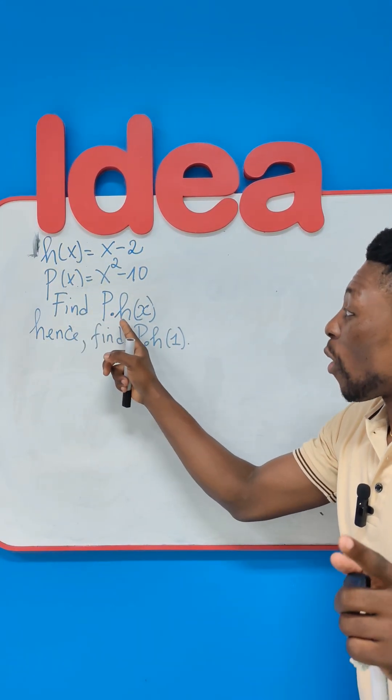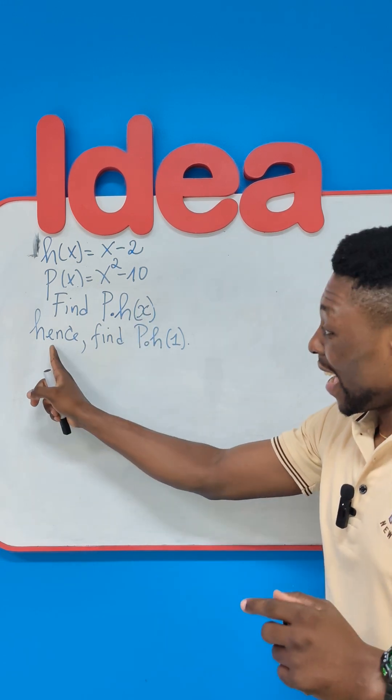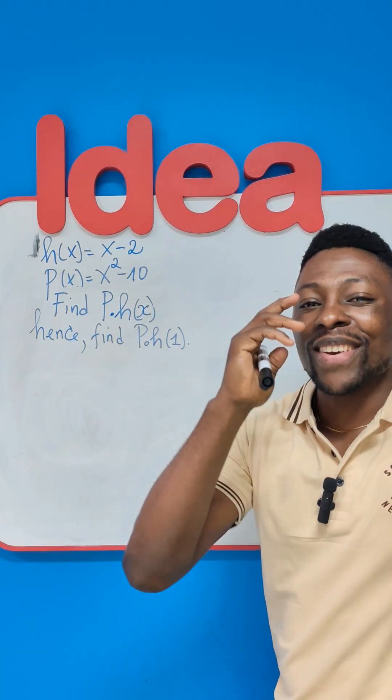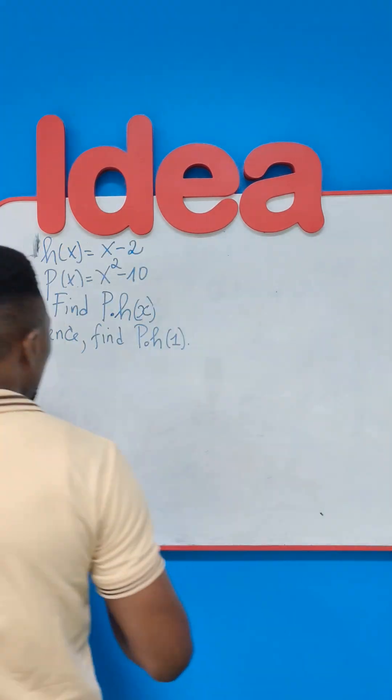Find P of H of X. Hence, find P of H of 1. Follow me, dear friends. Solution.